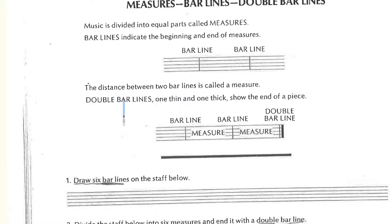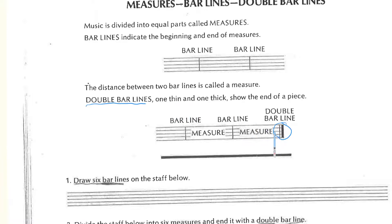Double bar lines — not regular bar lines — have one thin and one thick line and show the end of a piece of music. Every piece of music has a double bar line to indicate the end. So remember: one thin line and one thick line make the double bar line, while a regular bar line is just one thin line.